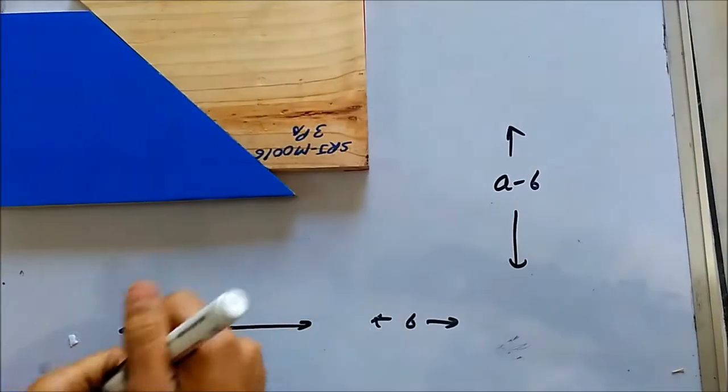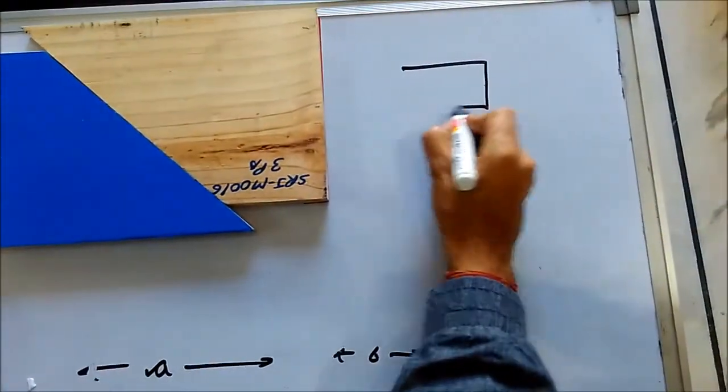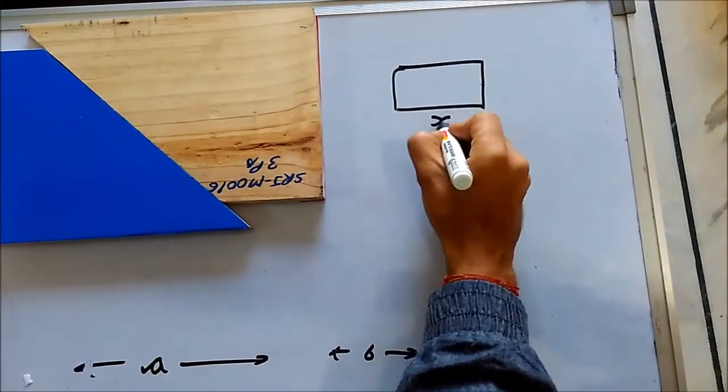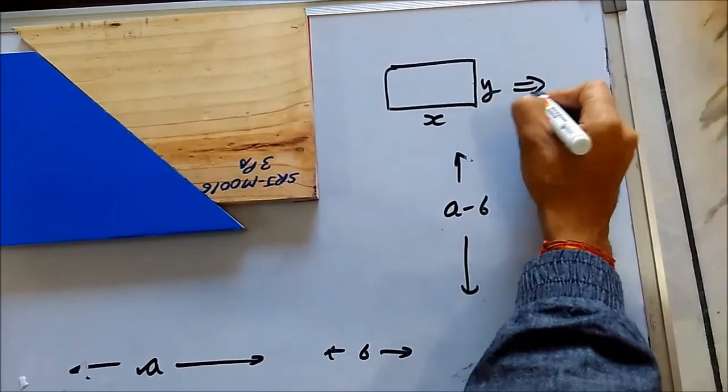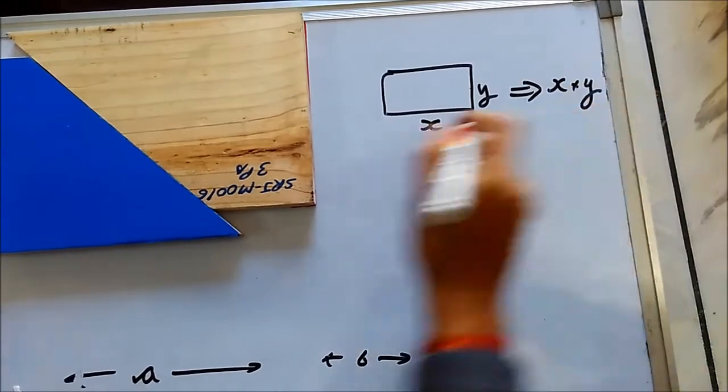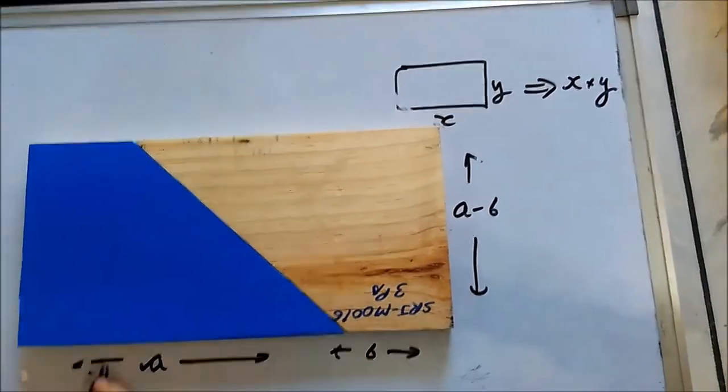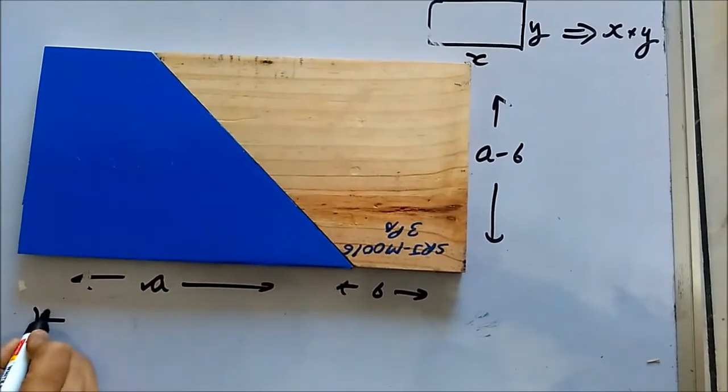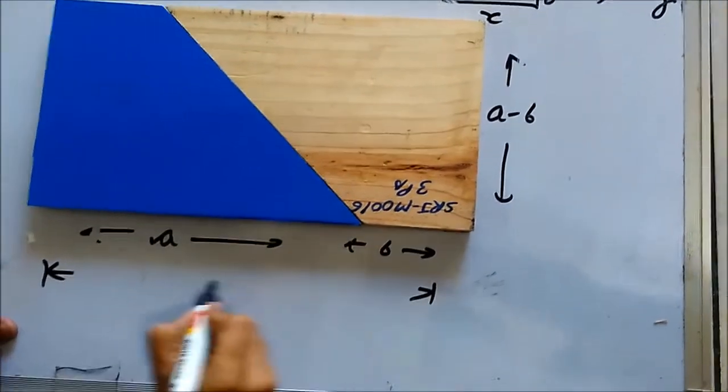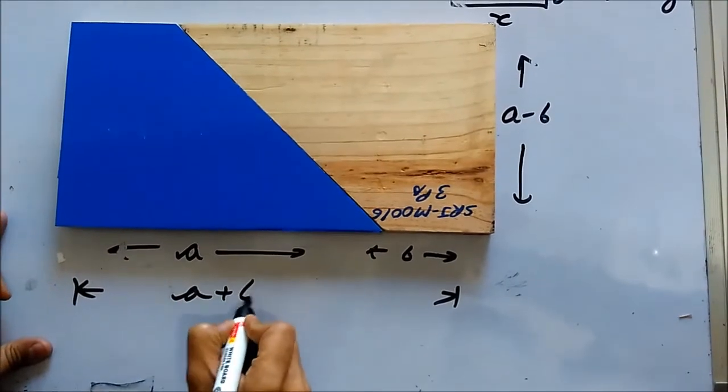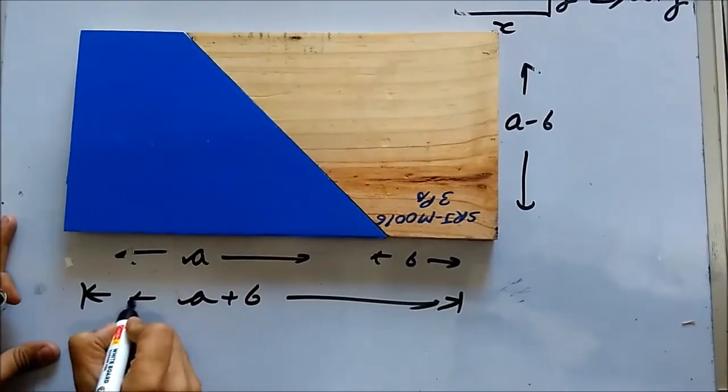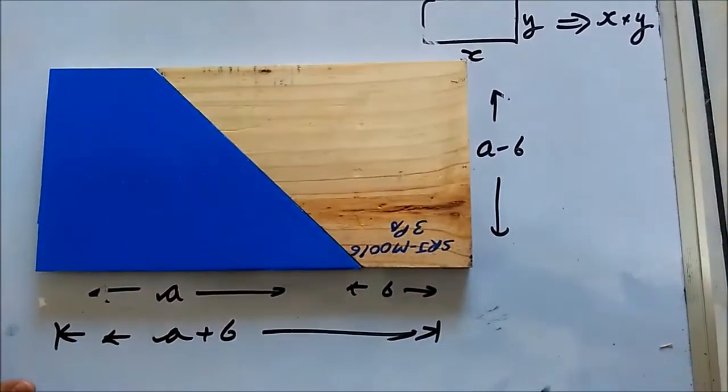You know the area of any rectangle with dimensions x and y, its area becomes x times y. The same will replicate in this particular case. So here what you can see is the length of this side from these two ends comes out to be a plus b, and this side is a minus b.